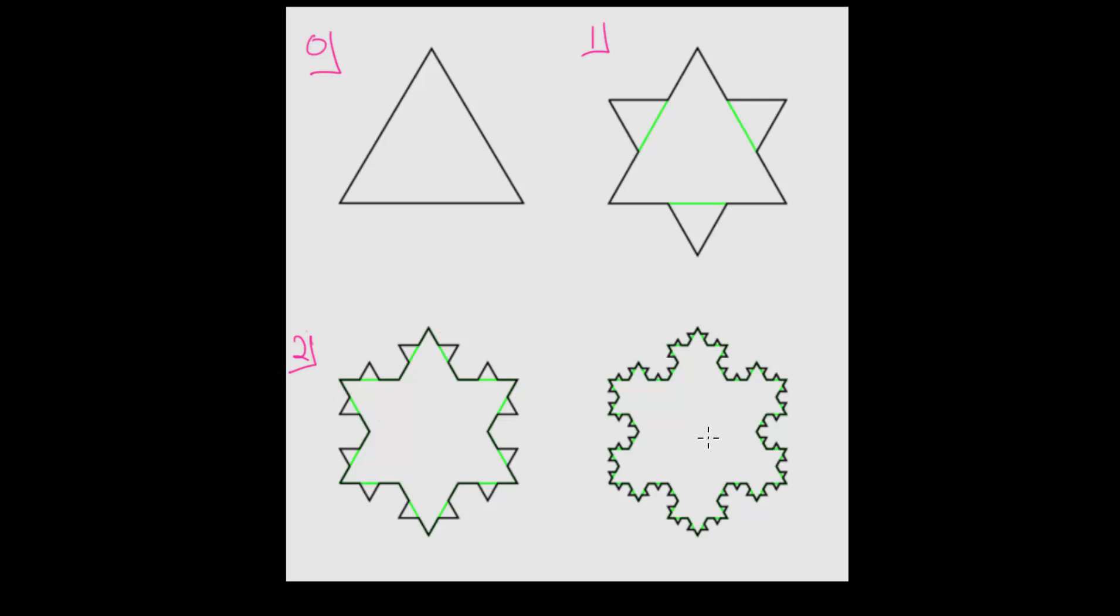For step 3, we'll just repeat that exact same process. Each of these side lengths now, we will split into three equal pieces, and in the middle piece, we will replace that with equilateral triangles. The image to the bottom right, which we can call step 3, is what that process will look like.